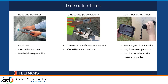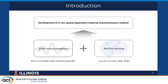There are many non-destructive testing methods, such as rebound hammer, ultrasound pulse velocity, and vision-based methods. Most of these methods use point-by-point measurement and are not very optimized for inhomogeneous material characterization. But concrete is inherently an inhomogeneous material, so to overcome these limitations, I'd like to propose a method for spatial-dependent material characterization in situ.